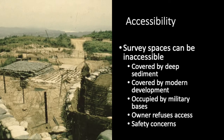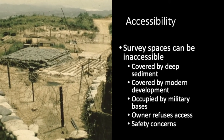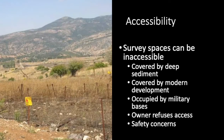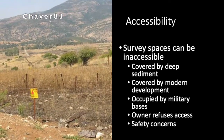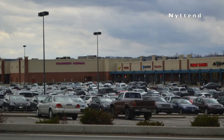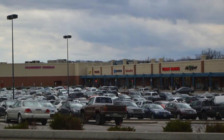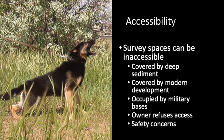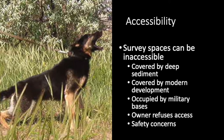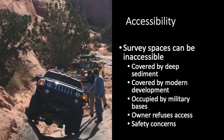It often happens that areas that were selected for survey turn out to be inaccessible. For example, the proposed survey area might be occupied by an army base, or worse yet, a minefield. Or it could be covered by deep sediment or asphalt, which is really a problem of visibility. More commonly, it could just have an uncooperative landowner, or there could be a vicious dog guarding the property, or other safety concerns, like steep cliffs.